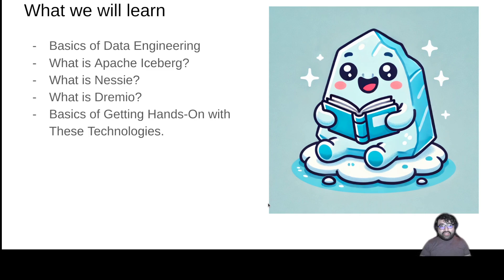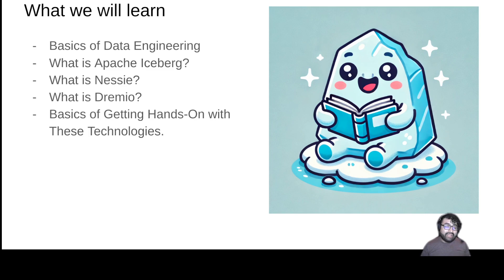In this course, we're going to learn about the basic terms when it comes to engineering — what is data engineering and some of the concepts around it, what is Apache Iceberg which is a table format, what is Nessie which is a catalog, and what is Dremio which is a lakehouse query engine and lakehouse platform. We're going to get hands on with all these tools to actually see how it is to do data engineering specifically with open lakehouse architecture. This is specifically about understanding lakehouse architecture and getting hands on with open lakehouse architecture with these specific technologies.